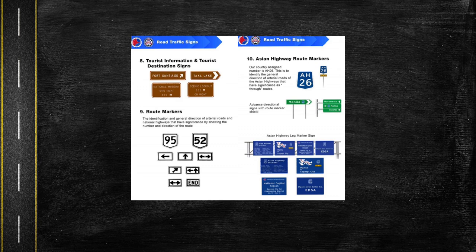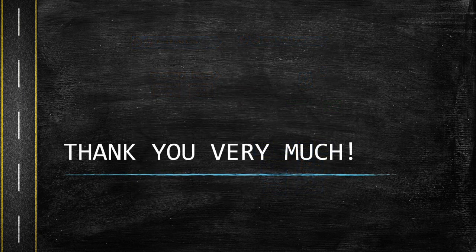The last one would be the Asian Highway route markers. Our country's assigned number is AH26. This is to identify the general direction of arterial roads of the Asian highways that have significance as through routes. There are also advanced directional signs with route marker shield and the Asian highway leg marker sign.